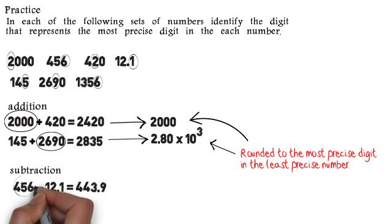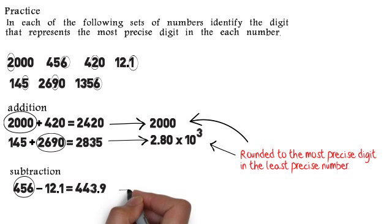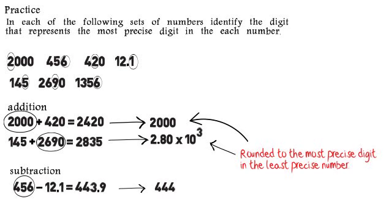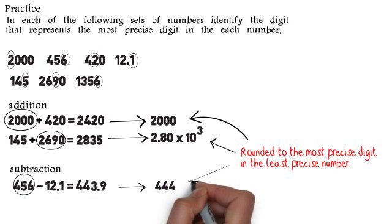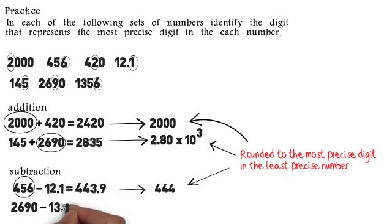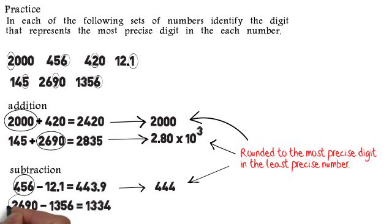For subtraction, 456 minus 12.1 gives us 443.9. The most precise digit in the least precise number is where the 6 is in 456, so we round to the ones place, giving us 444.